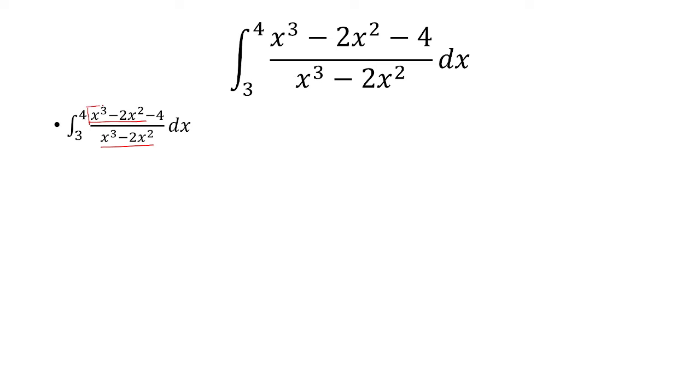The first fraction is going to have the numerator x cubed minus 2x squared. The second fraction is going to have negative 4. And so now the first fraction, the numerator and denominator are the same. So they're going to cancel and get 1.